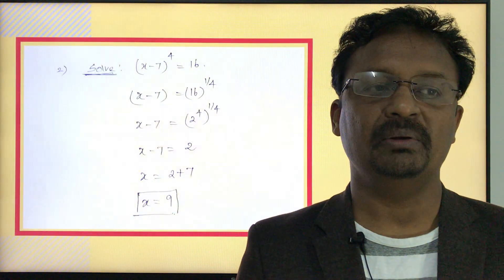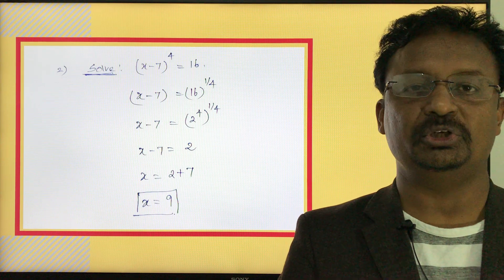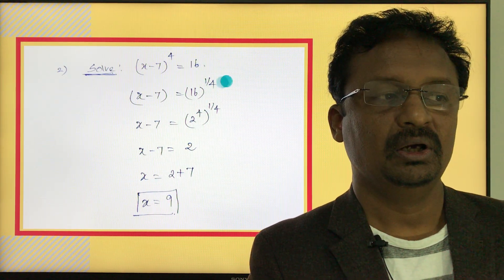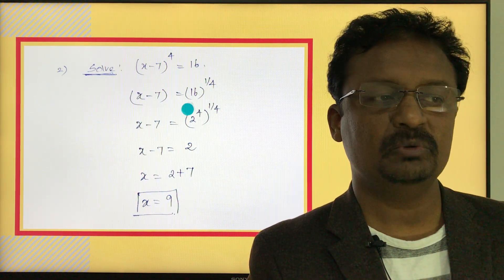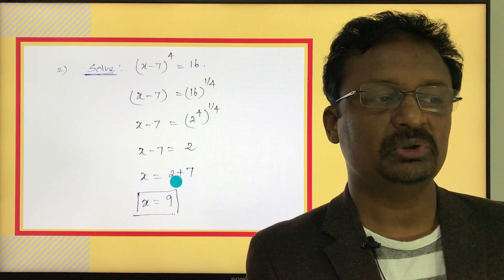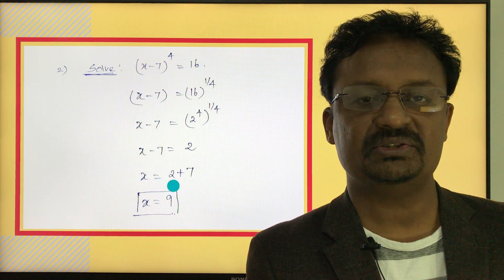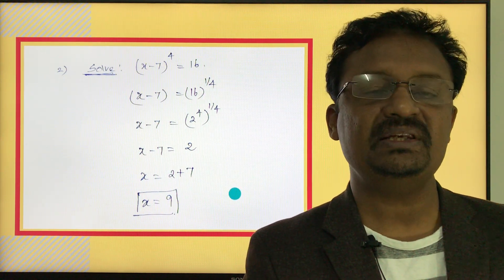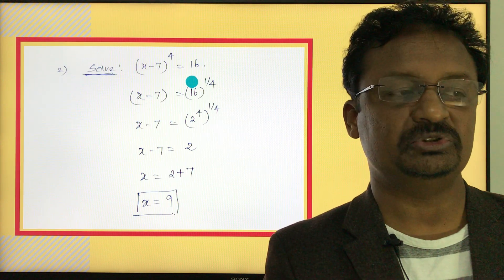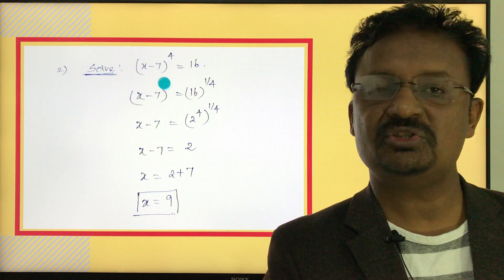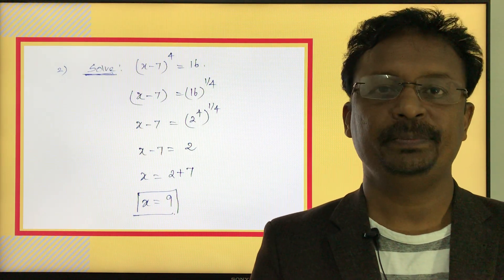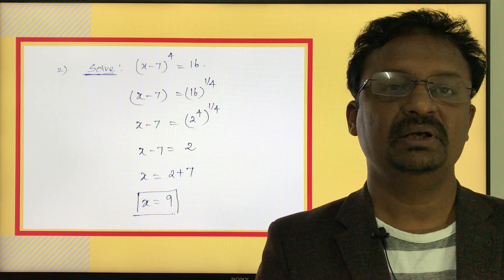The second equation problem: solve the quantity x minus 7, raised to the power of 4, equals 16. Raise both sides to the power of 1 over 4: x minus 7 equals 16 to the power of one-quarter. Since 16 equals 2 to the power of 4, cancelling the 4s gives x minus 7 equals 2. Therefore x equals 9. You can verify: 9 minus 7 is 2, and 2 to the power of 4 equals 16, which confirms the solution.